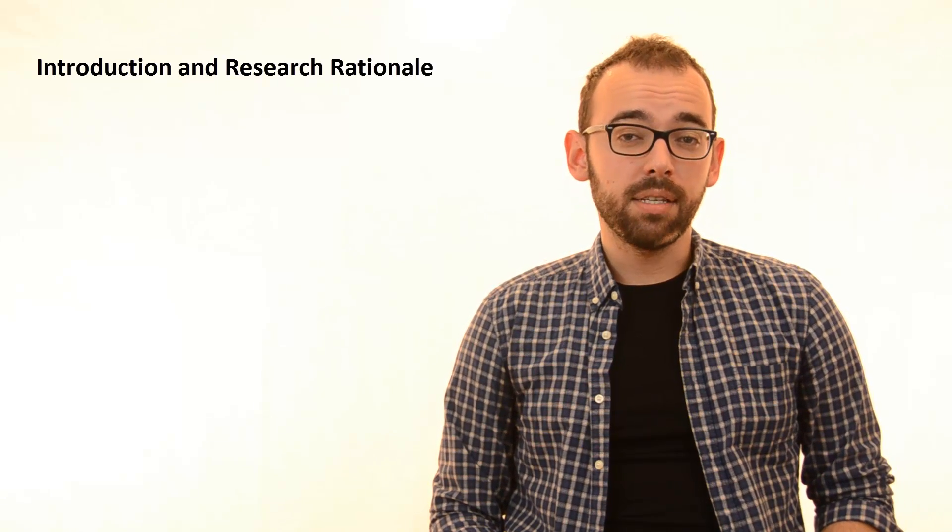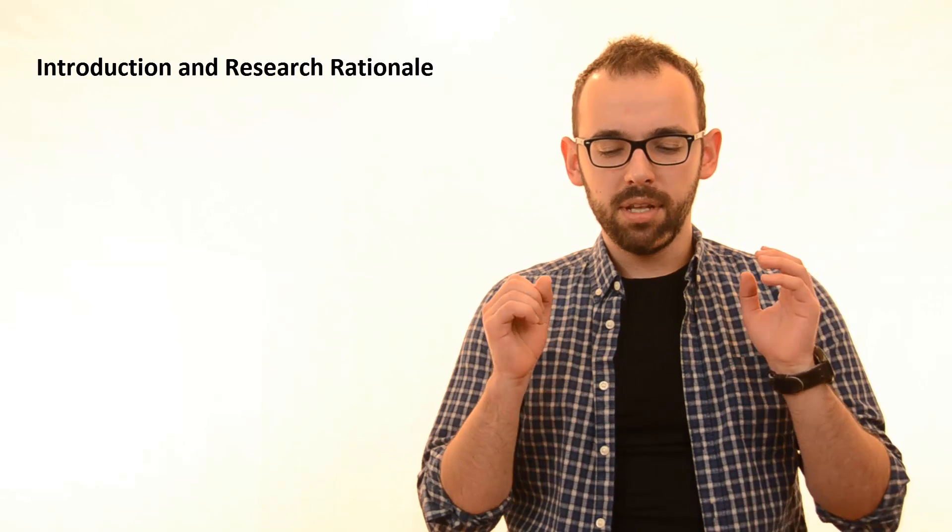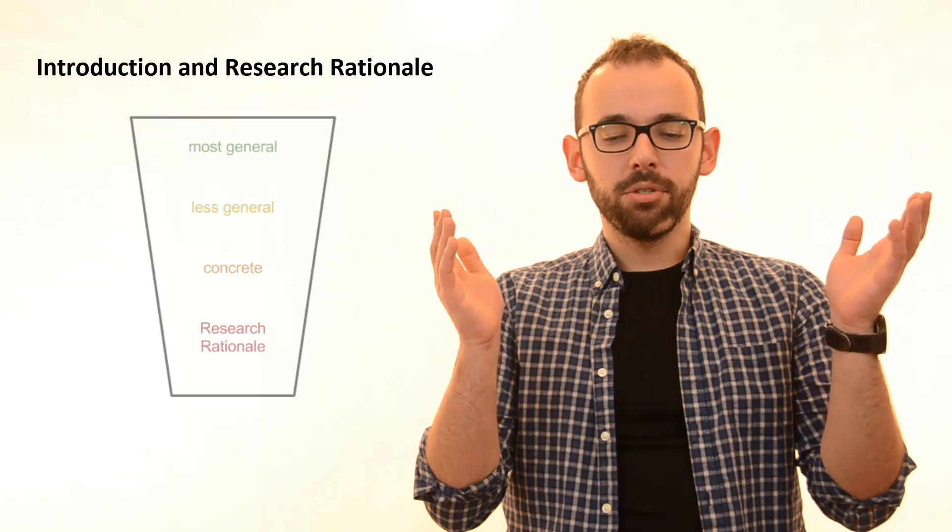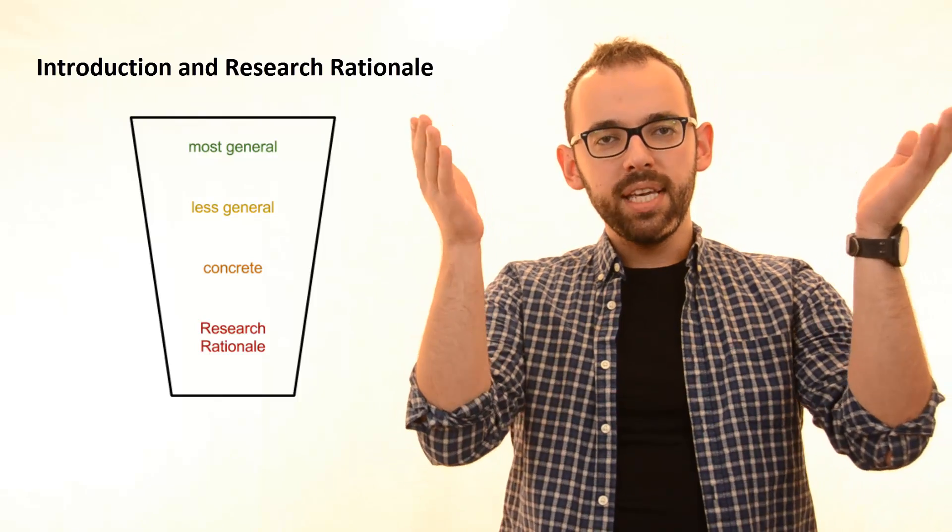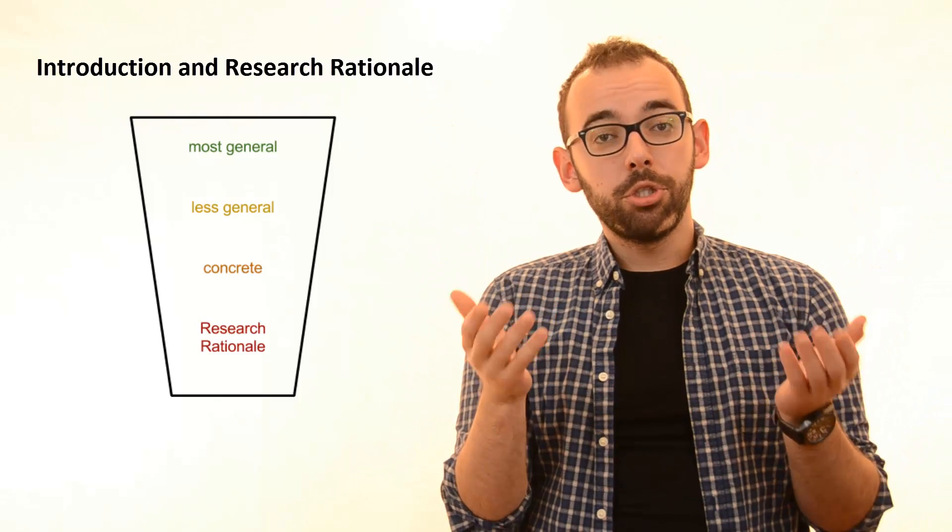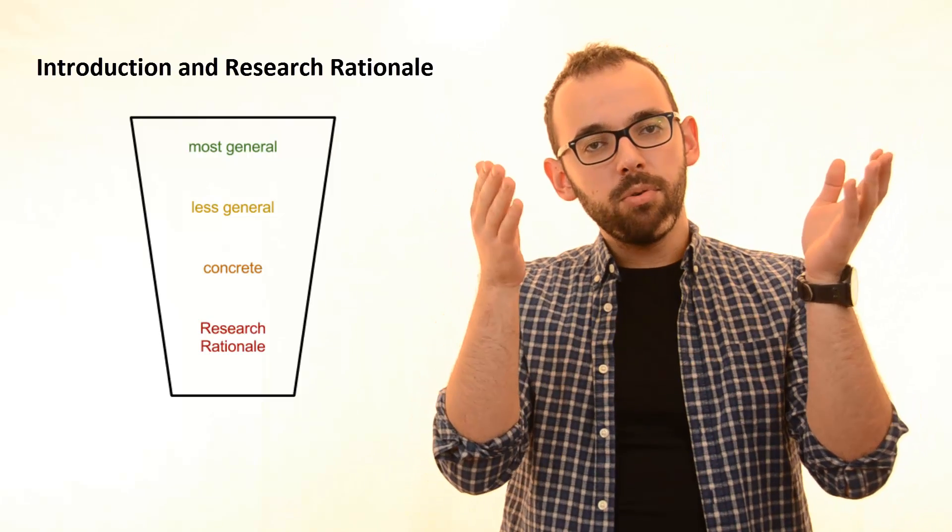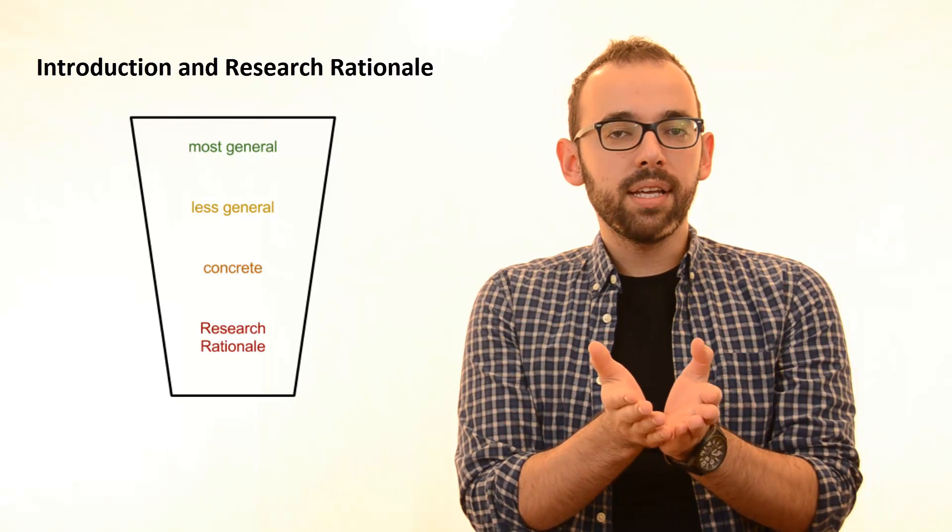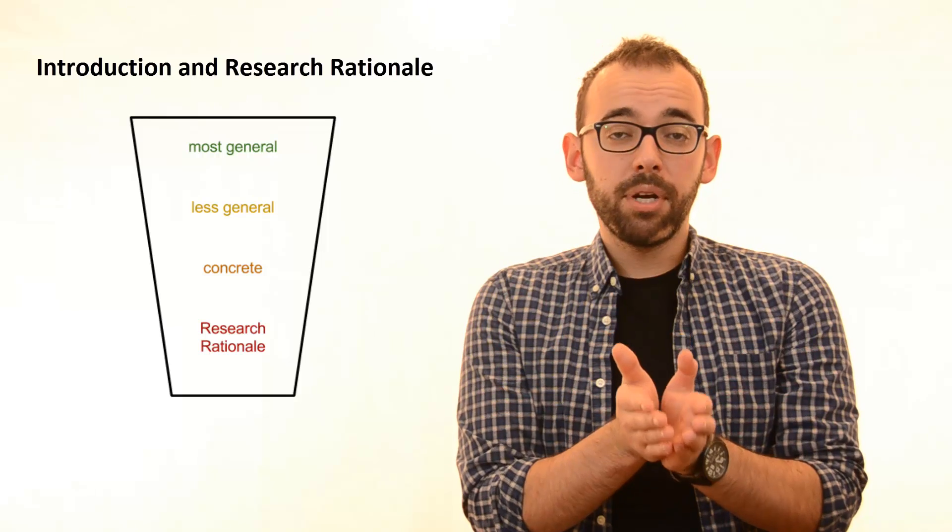Let's say you've done some basic literature review and have some information. Your introduction should have a V shape. You start with the most general things, then slowly and gradually narrow down to the most concrete idea, which will be stated at the end of the introduction—the rationale of the research.